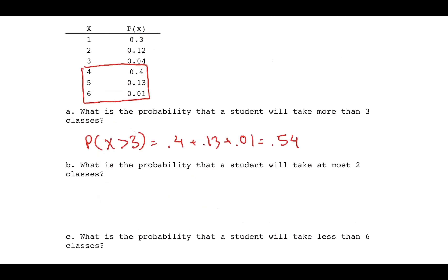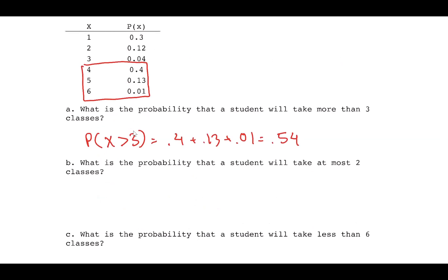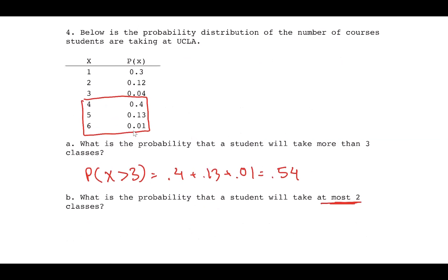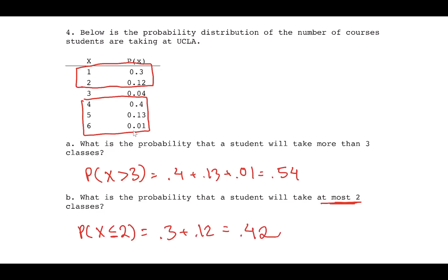Part B: what is the probability a student takes at most two classes? 'At most two' means P(X ≤ 2) = P(1) + P(2) = 0.30 + 0.12 = 0.42.